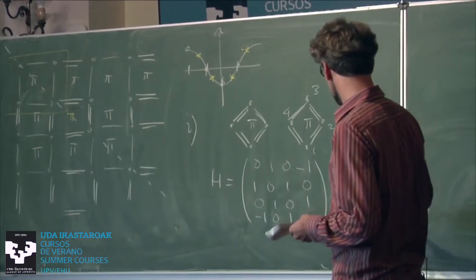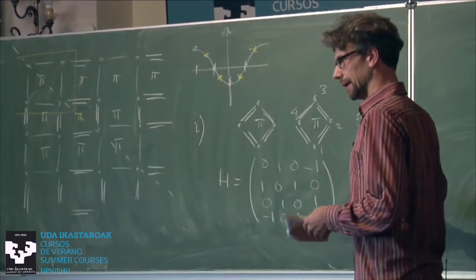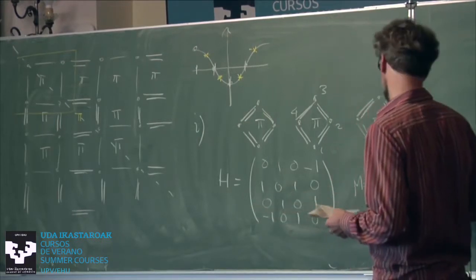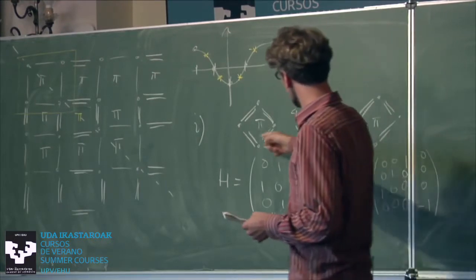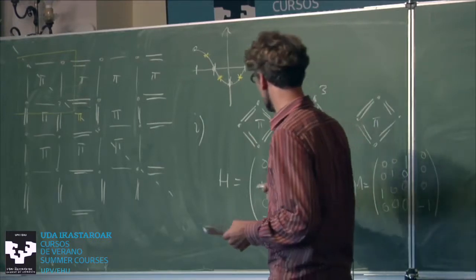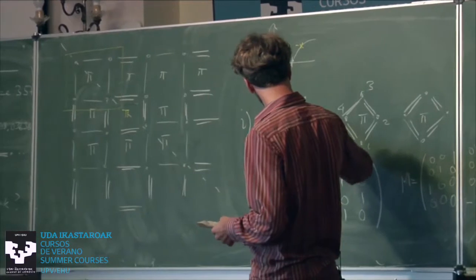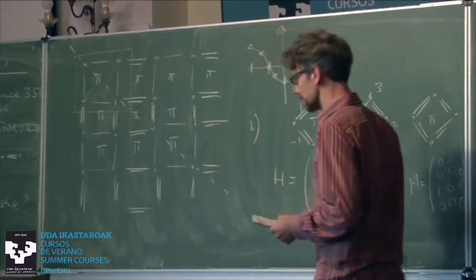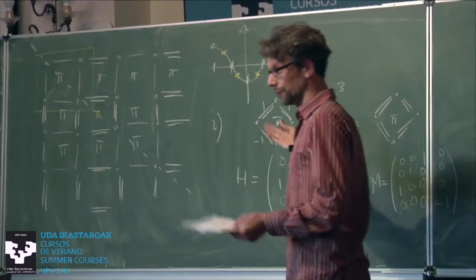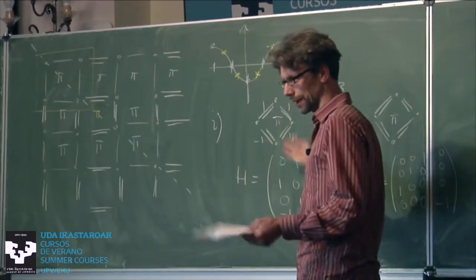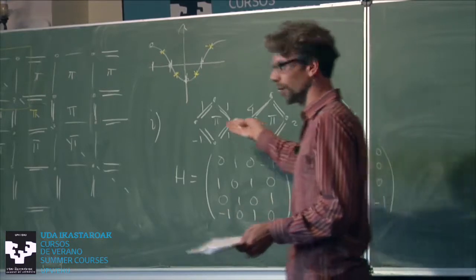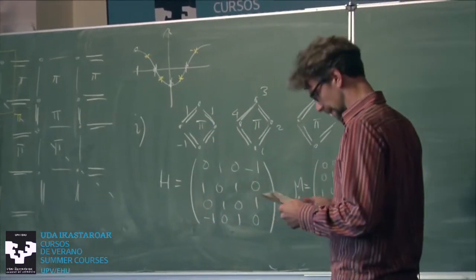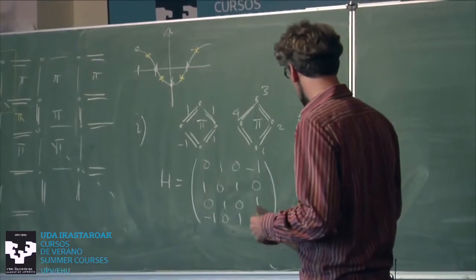This is effectively a spinful mirror symmetry combined with a gauge transformation, because the Hamiltonian's hoppings are {1, 1, 1, −1}, which naively breaks mirror symmetry — but it's only the gauge that breaks it. The physical system is obviously mirror symmetric, and we correct for that by choosing this mirror symmetry appropriately.